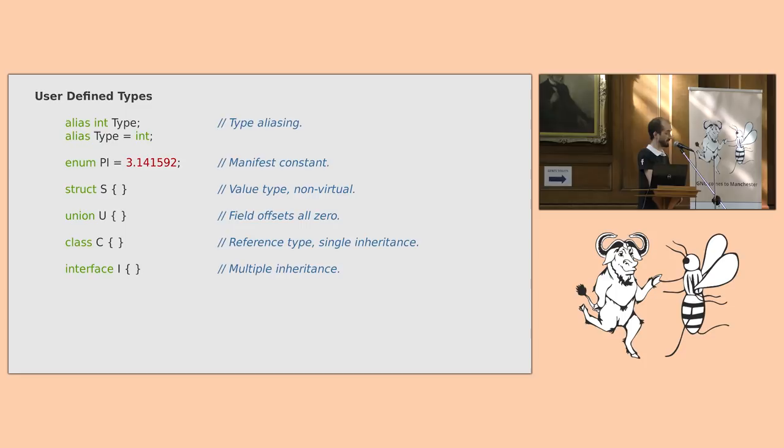If you want to do object-oriented programming in D, you use a class. Classes are reference types, distinct from structs, and are typically allocated on the GC. With classes, you can only inherit from one other class. If you want multiple inheritance, that's where interfaces come in. Interfaces can only contain declarations of members, which must be implemented by the class, or non-virtual member functions.